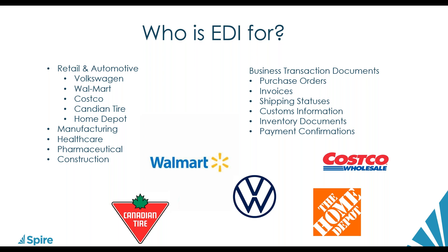To deal with big box stores, you need EDI. It's really designed to streamline that data connection between your business and those retailers. Gerhard, can you give us some examples of the types of documents we're talking about? Each industry has its own series of documents — they go by number. The 800 series pertains mostly to retail companies like Costco, Walmart, and Home Depot. At the most basic level, the 850 is usually the starting point — that's the purchase order.